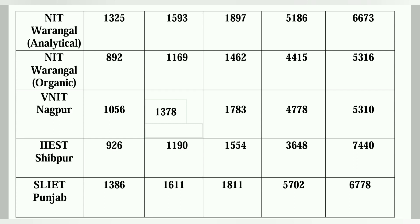In the CCMN counselling system there are 22 institutes and 20 offer chemistry. The top 5 or 6 institutes are: NIT Trichy, NIT Warangal, IIST Shibpur, NIT Rourkela, MNIT Jaipur, NIT Suratkal, NIT Durgapur, NIT Calicut, NIT Jamshedpur, and NIT Jalandhar. If you get admission to any of these institutes, it's a good opportunity.